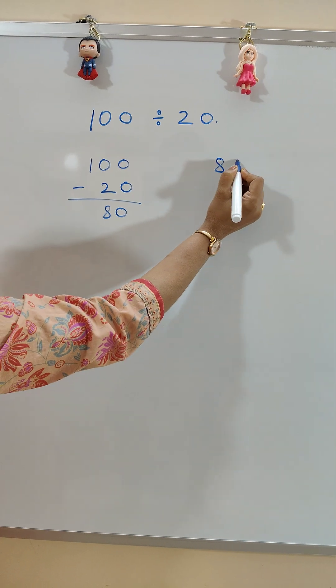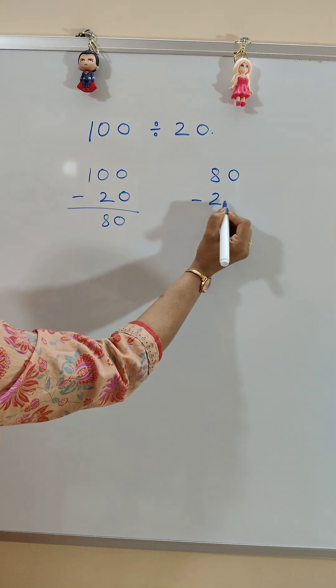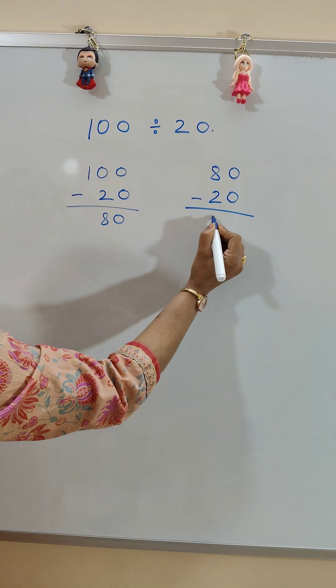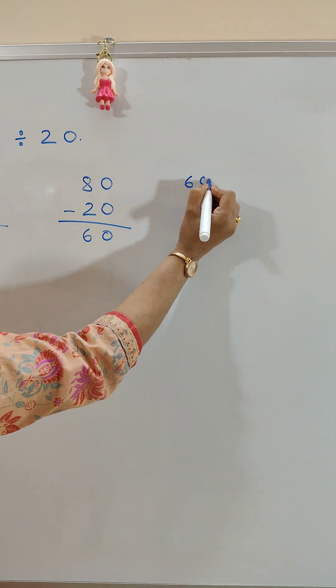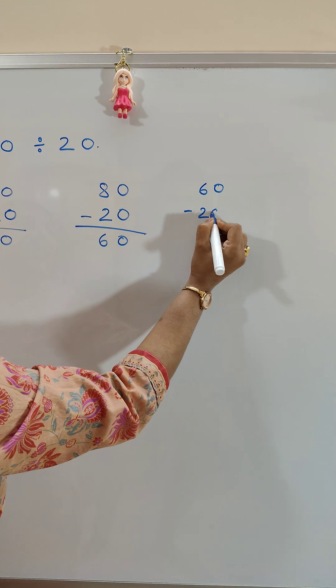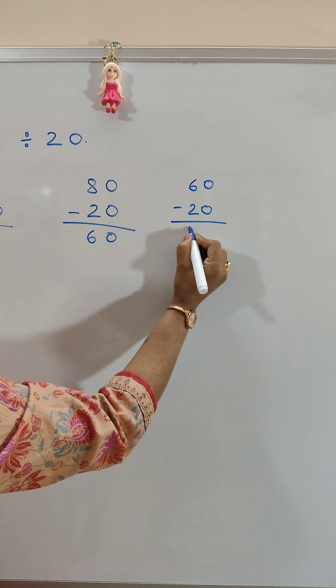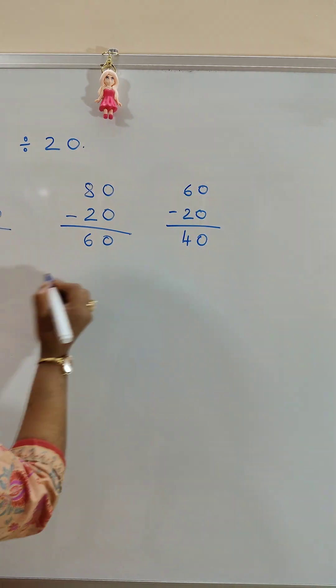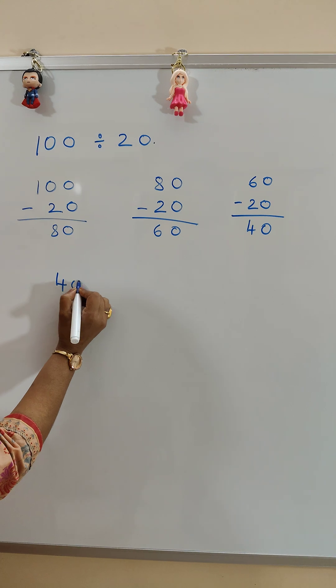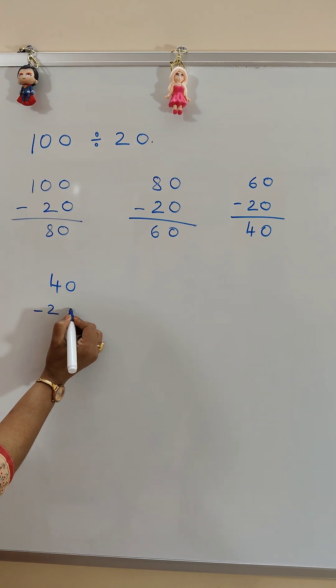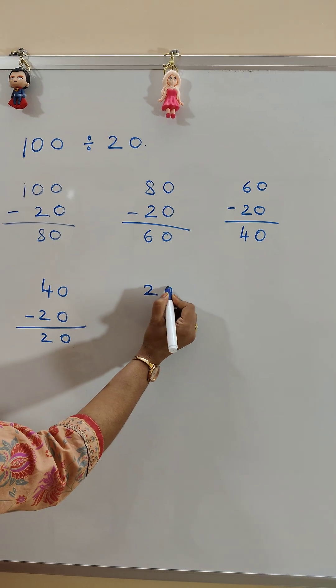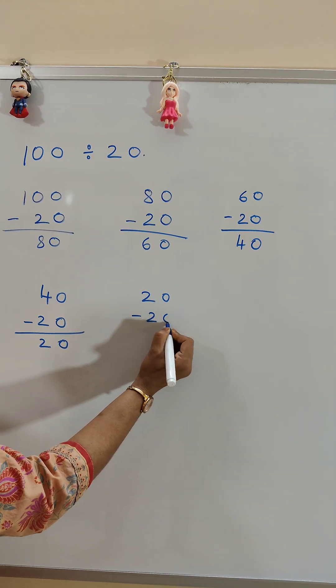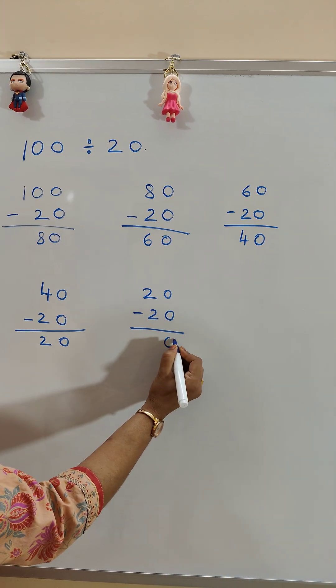80 minus 20 is 60. 60 minus 20 is 40. 40 minus 20 is 20. 20 minus 20 is 0.